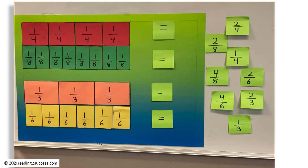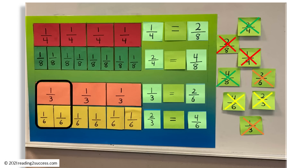Parents, welcome to How to Teach Kids Equivalent Fractions. The teaching activities and templates used in this video are focused on teaching kids how to identify fractions that have the same value, known as equivalent fractions, and fractions that don't have the same value. At the completion of this video, it is the goal that kids will be able to match equivalent fractions: one-fourth equals two-eighths, two-fourths equals four-eighths, one-third equals two-sixths, and two-thirds equals four-sixths.